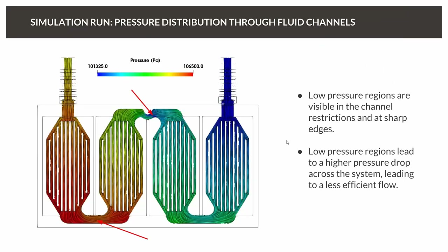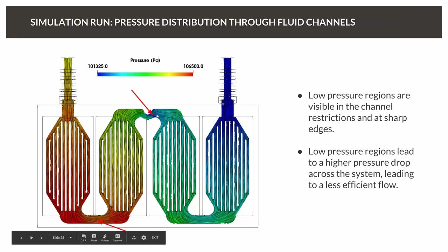Looking at how fluid flows through the water channel, there are significant contractions, flow separations — for example at the inlet angle — and recirculations around the heatsink features. All of this contributes to a high pressure drop between inlet and outlet. Pressure drop directly determines the pumping energy required to push fluid through the channel, and whether that energy is proportional to the heat removed is an important consideration.